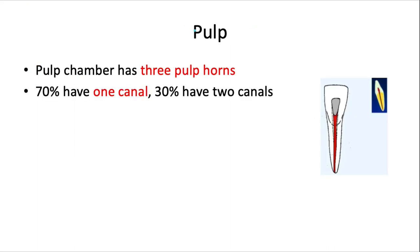Just like the maxillary incisors, it usually has three pulp horns in accordance with those three facial developmental lobes, and most of the time there is one canal. But unlike the maxillary incisors, there's a 30% chance that we see two separate root canals.